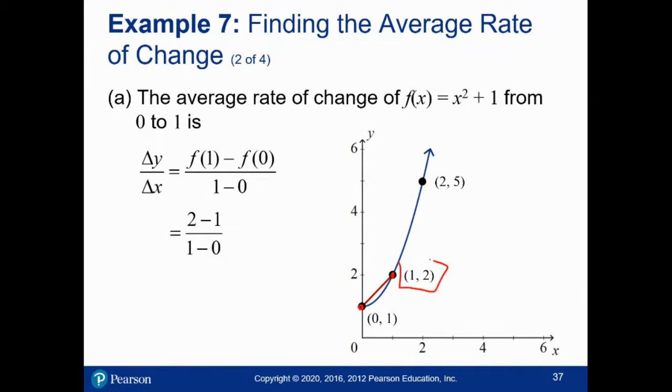F of 1 is 2, that's given to us right here. F of 0 is 1, that's given to us right here. So I make those replacements. And we get 1 over 1, which is 1. The average rate of change is 1.